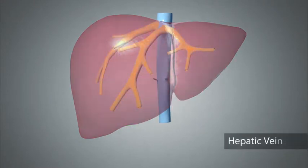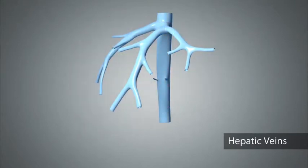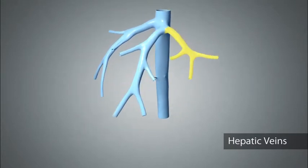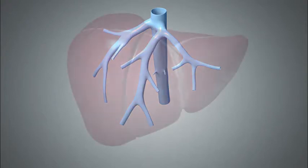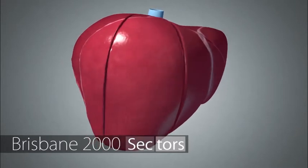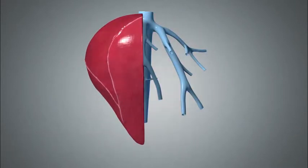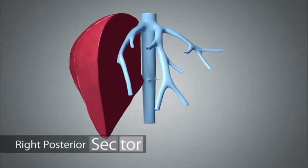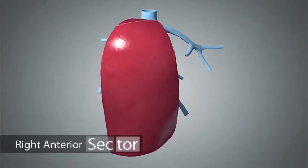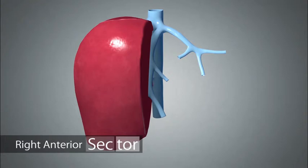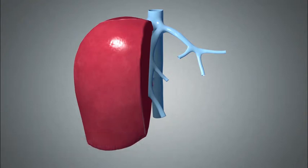The hepatic veins function to drain the blood from the liver to the IVC. The main veins include the right hepatic vein, middle hepatic vein, and left hepatic vein. According to Brisbane 2000 terminology, the hepatic veins divide the liver into sectors. The right hepatic vein separates the right posterior sector from the right anterior sector. The right anterior sector is the liver parenchyma that lies between the right hepatic vein and the middle hepatic vein, and this definition is consistent between both the Brisbane and the modified nomenclature systems.